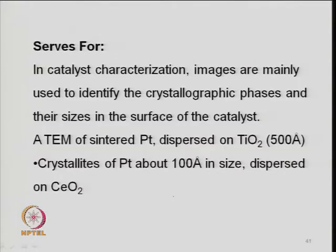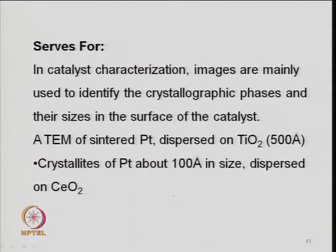Transmission electron micrographs provide wide information and images are mainly used to identify crystallographic phases, their size, and the surface of the catalyst. How metals are distributed, dispersion, agglomeration, and coke formation on the surface can all be read from the image. For example, a sintered platinum on titania at roughly 500 Å and crystallites of platinum at about 100 Å on ceria can be visualized.